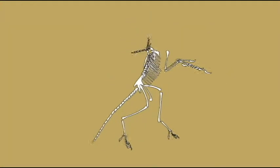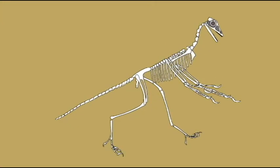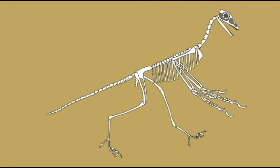There are avian features, such as feathers, arms long enough to form wings, and the first toe reversed for a perching foot.